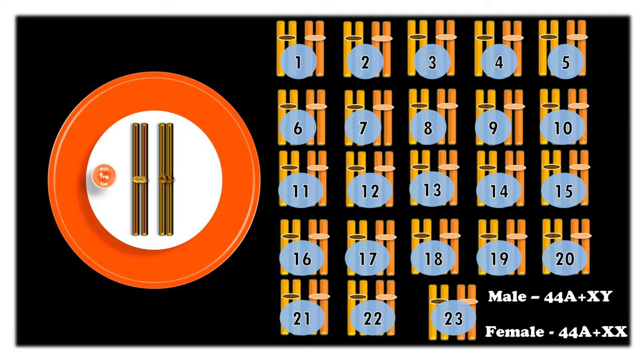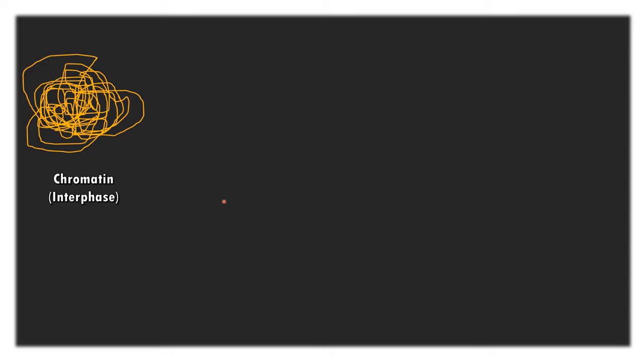Now, this is the first form visible during interphase, which is chromatin. What is chromatin? It is a long, thin, thread-like structure present during the interphase stage. This chromatin condenses to form chromosomes.